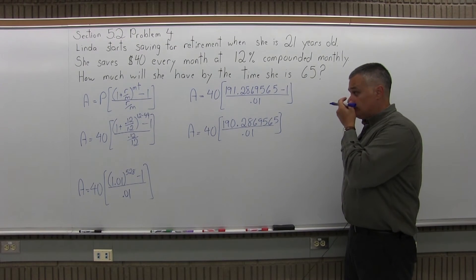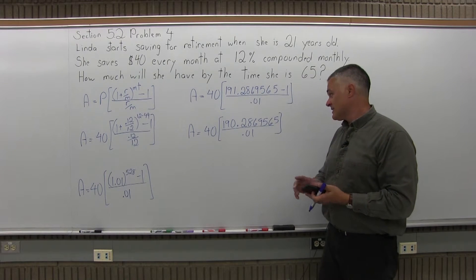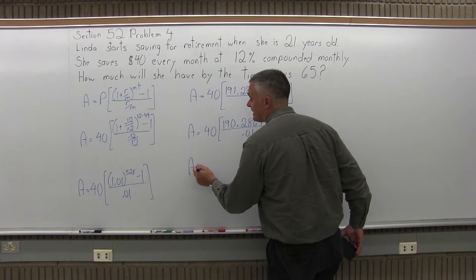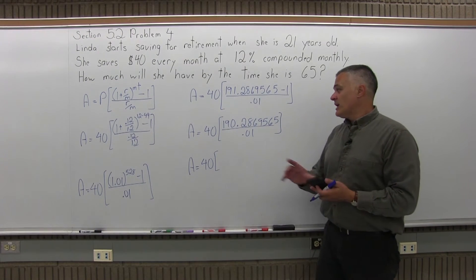And now, in the brackets, I'll do the division, the 190.2869565 divided by 0.01. That'll give me one number in the brackets, and I'll still have a times 40 in front of those brackets. So to get the brackets down to one number,